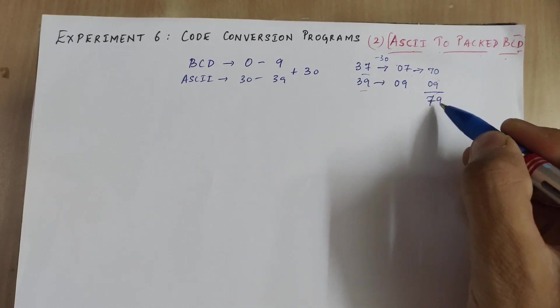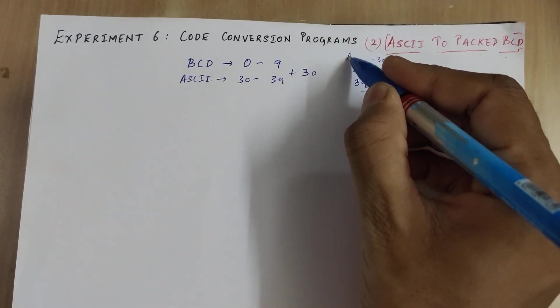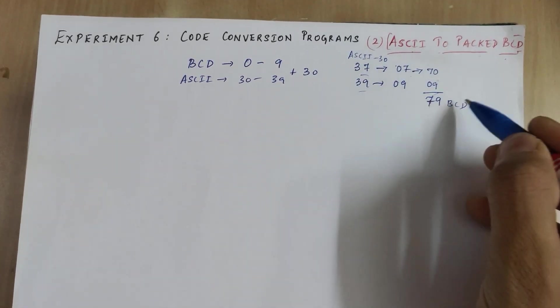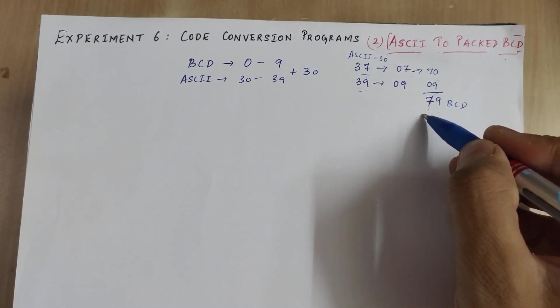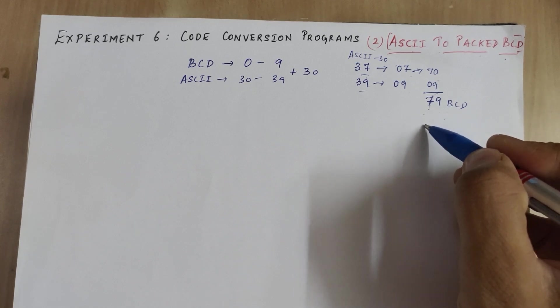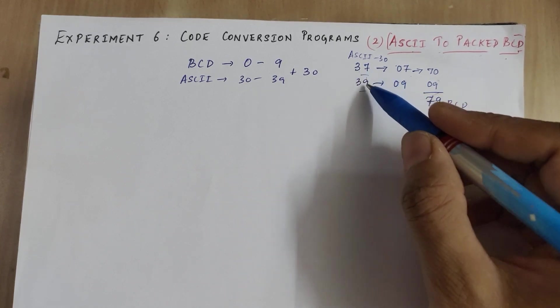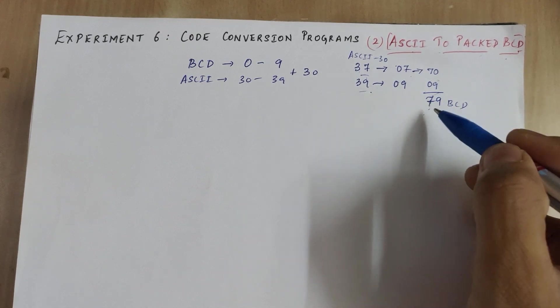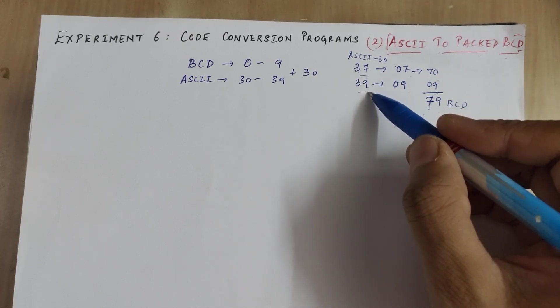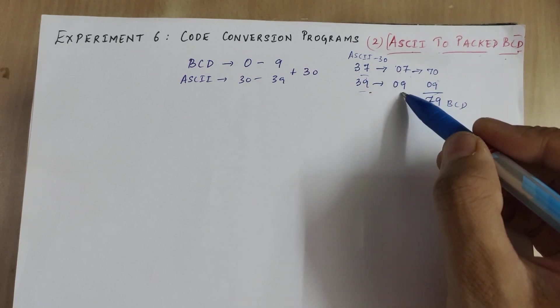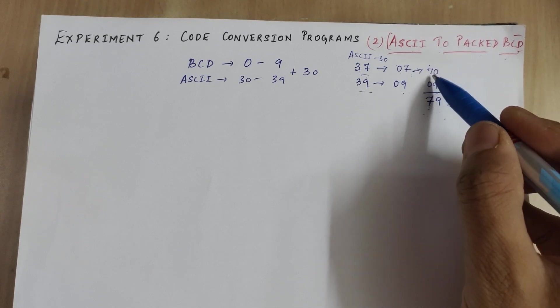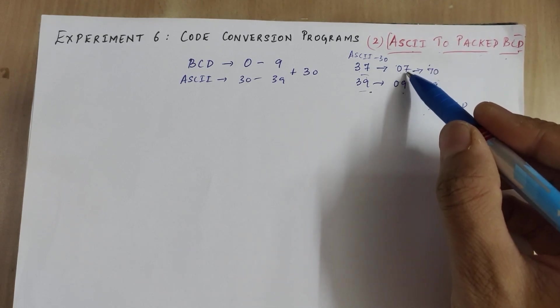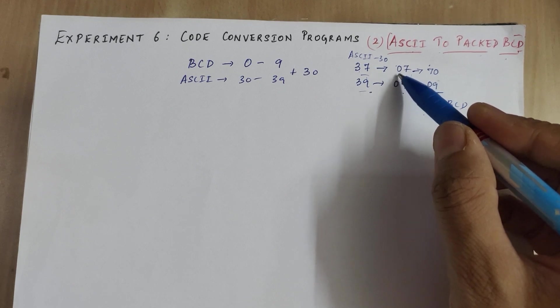Let's verify. If we convert the BCD number 79 into ASCII, we unpacked it first, separated 07 and 09, then added 30 to both digits and got 37 and 39. So now when 37 and 39 are given, we're taking back the BCD digits and we have to add them. Before adding we are swapping because this has to be converted into the most significant digit position.